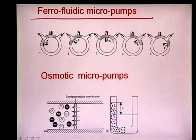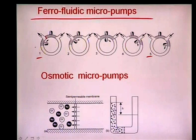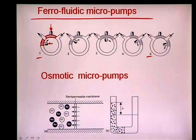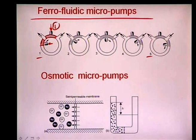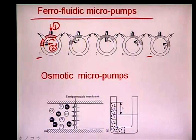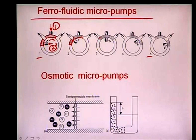A more detailed ferrofluidic micropump uses two plugs and two magnets — one toward the inside and one toward the outside of a circular channel. As the outer magnet rotates clockwise, it drives the ferromagnetic plug along with it until the plug contacts and blocks a port.